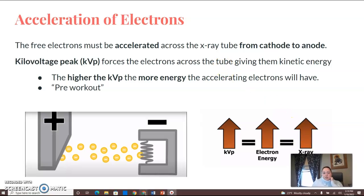For acceleration of the electrons, they have to be accelerated from the cathode end of the tube to the anode end, so they need energy. Your kilovoltage, or KVP, forces the electrons across the tube by giving them kinetic energy. Think of KVP as your energy—I put pre-workout in here as an analogy. If you need energy to get moving,